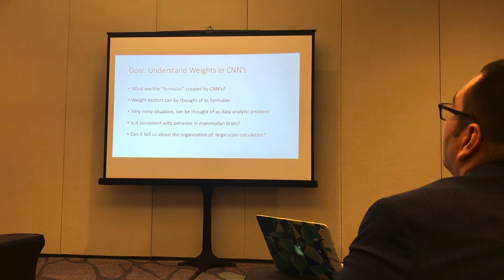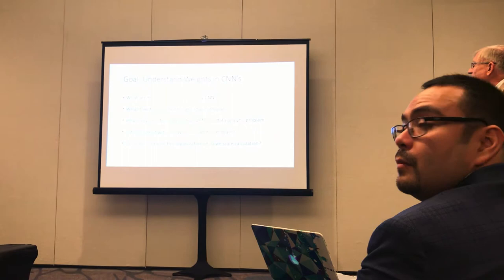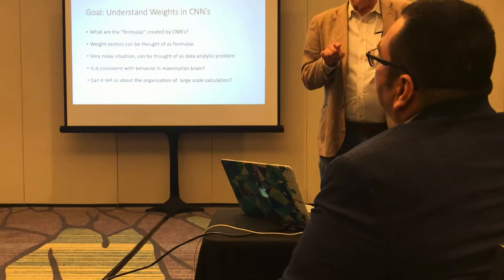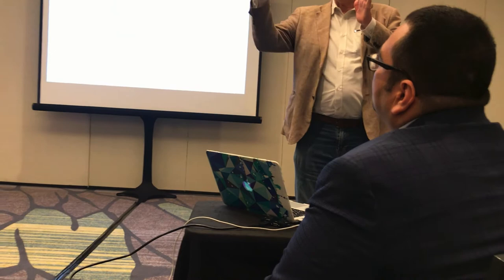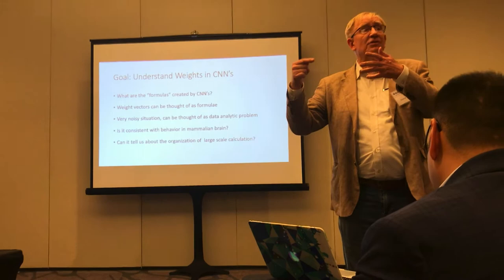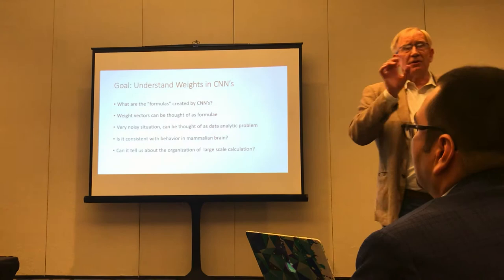So what do we mean by understanding? We can think of the weights in a CNN — convolutional neural net. The set of weights is some huge formula that's computing values of a function or a classifier. The weight vectors can be thought of as a formula. We're going to take a convolutional neural net and look at the weights that come into a particular node. If I imagine I have two convolutional layers of the same size, one of the pixels has nine weights attached to it. We're going to think of trying to understand the set of those nine vectors — we call those weight vectors.